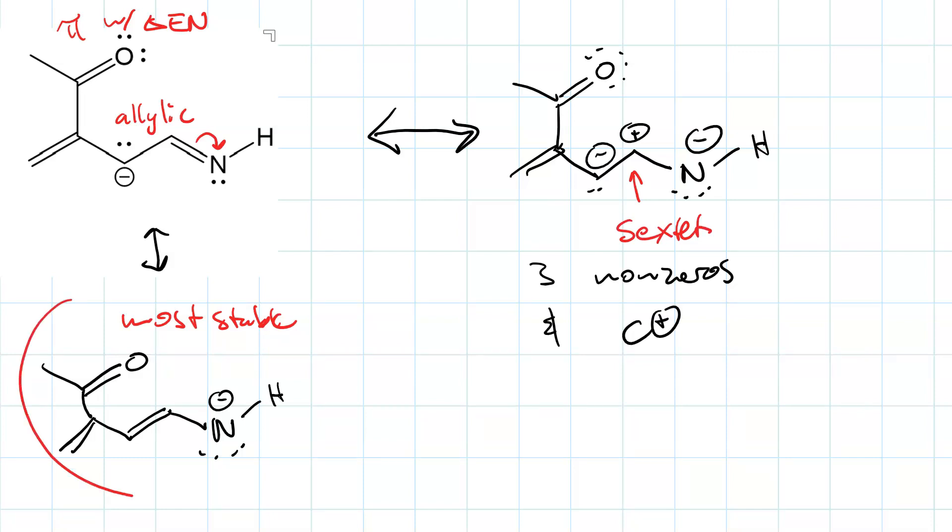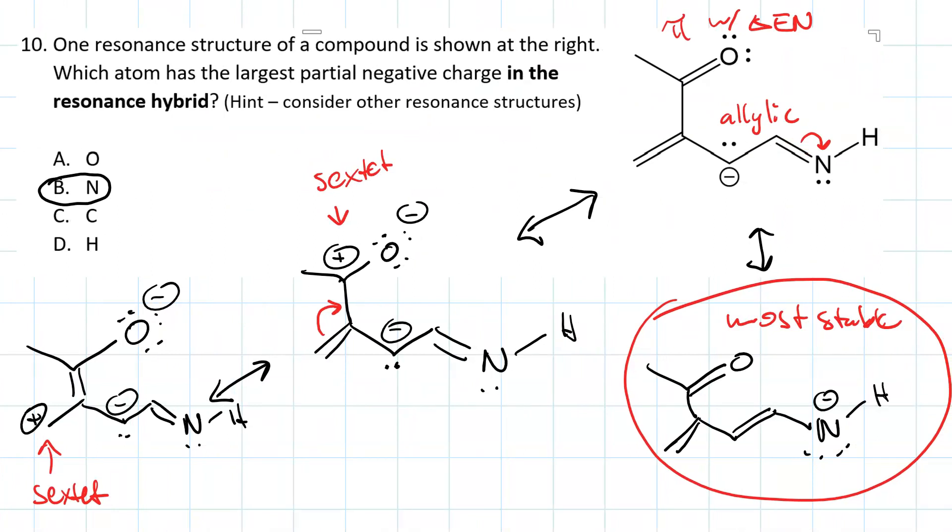So, that's why this is the most stable resonance structure. And going back, B is the best answer. Nitrogen has the most partial negative charge in the resonance hybrid.